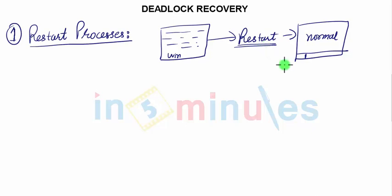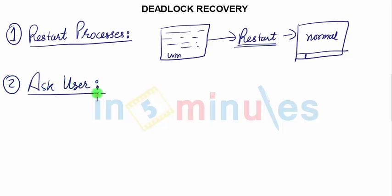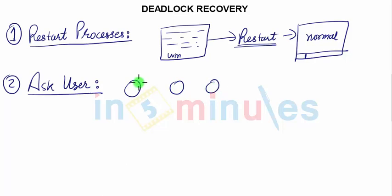If this doesn't happen and the system again meets with a deadlock, then the remaining two techniques are used. The first of those techniques is 'Ask User.' We already know that deadlock is due to an endless wait, or rather a circular wait, where each process is waiting for the other.